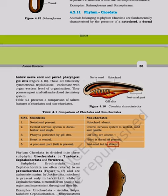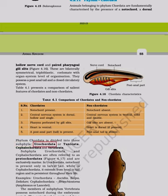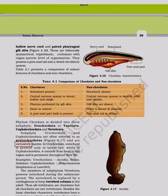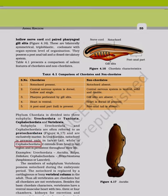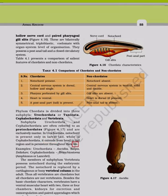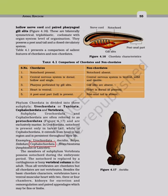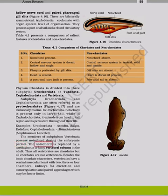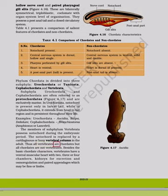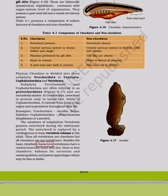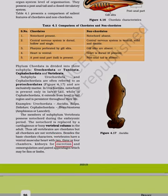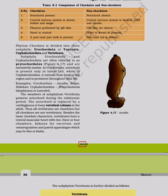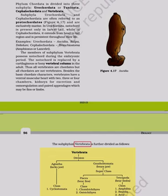Phylum Chordata is divided into three subphyla: Urochordata (Tunicata), Cephalochordata, and Vertebrata. Urochordata and Cephalochordata are called protochordates and are exclusively marine. In Urochordata, the notochord is present only in the larval tail; in Cephalochordata, it extends from head to tail and persists throughout life. Examples: Urochordata — Ascidia, Salpa; Cephalochordata — Branchiostoma (Amphioxus or Lancelet). In Vertebrata, the notochord is replaced by a cartilaginous or bony vertebral column in the adult. Vertebrates also have a ventral muscular heart with two, three, or four chambers, kidneys, and paired appendages (fins or limbs).